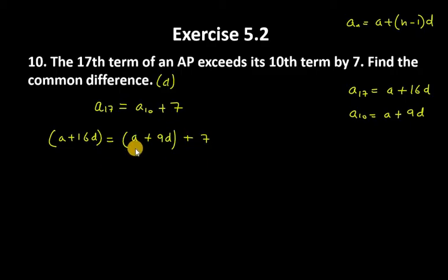You can see that both sides have A, so A will cancel A. D is on the left-hand side. 16D minus 9D equals 7. So 16D minus 9D is how much?